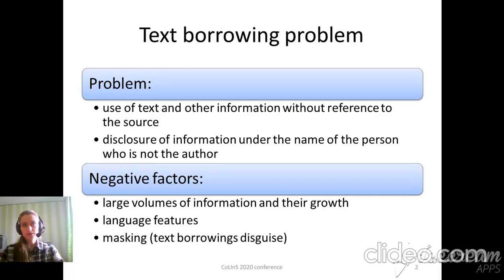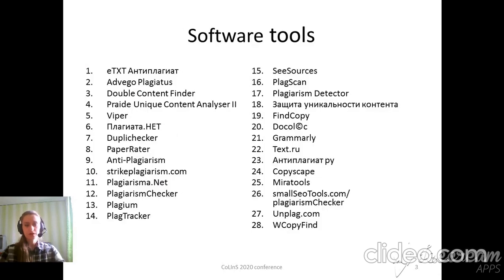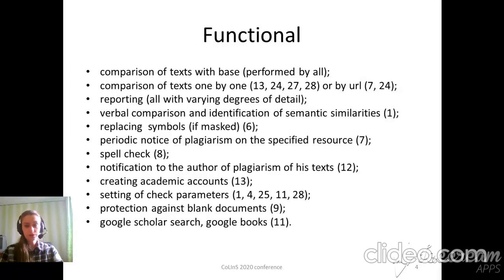These are special tricks that help users to disguise the text-borrowing in their works. Today, IT companies have developed software tools for plagiarism detection. We considered 28 applications — desktop applications and online services. Their main functions are comparison of text with a base, one by one or by URL, and creating the report.